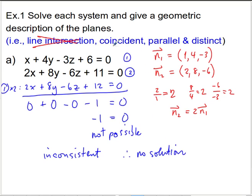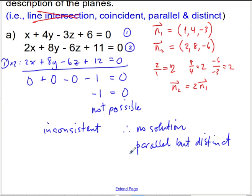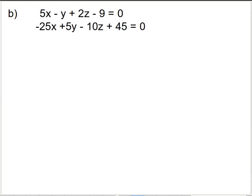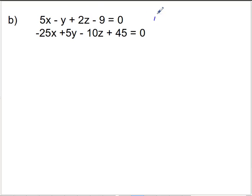Another way of saying this is to say that this is an inconsistent system, and therefore we have no solution. We have planes that are parallel but distinct. For the next exercise, I'll label these as equation 1 and equation 2, and over here in my rough, let's take a look at what the normals are for these two: 5, negative 1, 2.